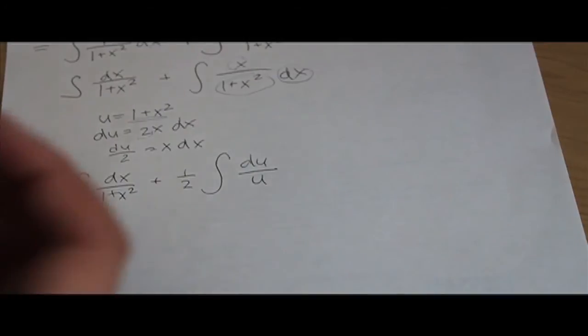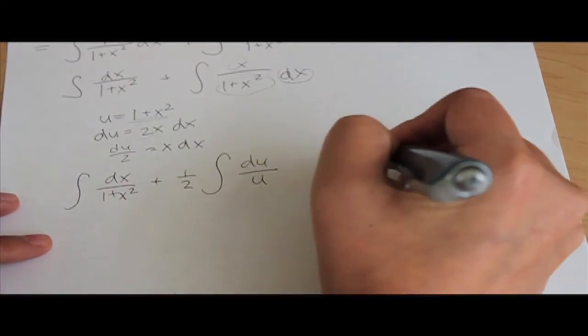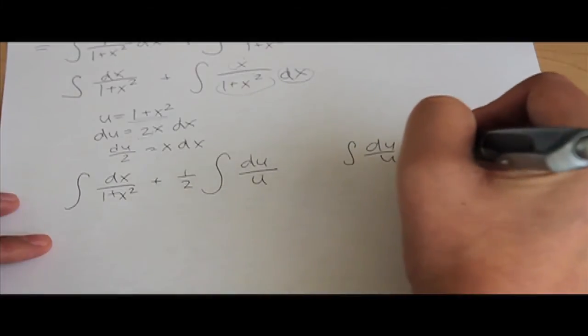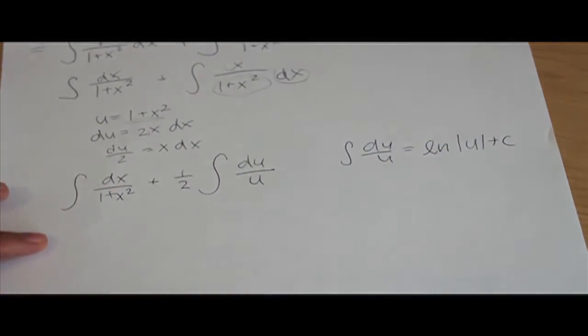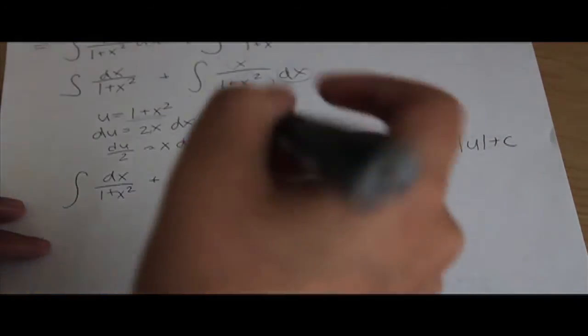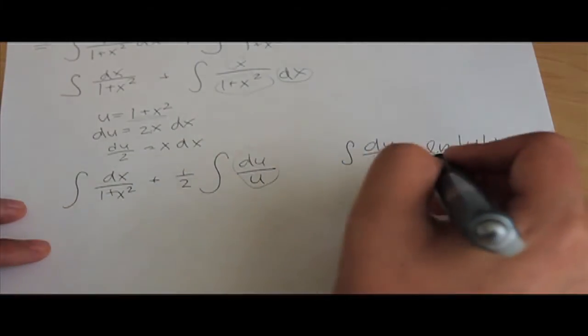Now if you guys remember, the integral of du over u equals the natural log absolute value u plus c. That's just something that you learn in your calculus class. So the next step we're going to take is we obviously see we have that du over u, so we know that's going to be that.